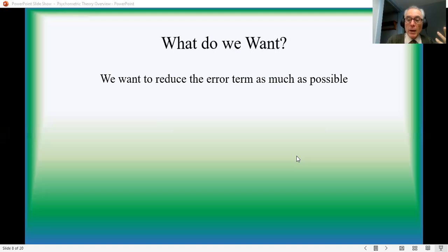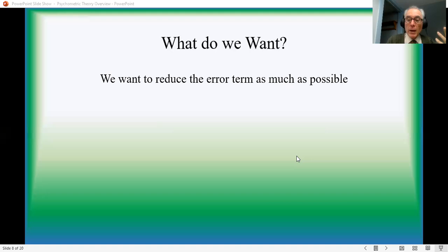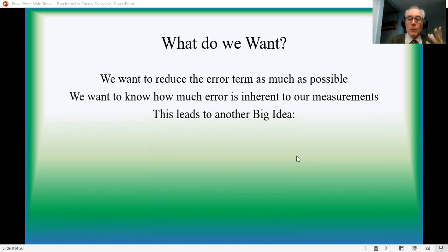What we want, of course, is to reduce that error term. We want the most accurate measures possible. Which means to start with, we need to know at least how much error is built in, is baked in to the measurement tools that we're actually using. And this leads to the second big insight in psychometric theory. There are really three altogether. The first is this fundamental idea, X equals T plus E. The second one is the concept of reliability.